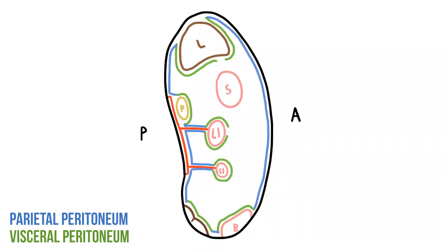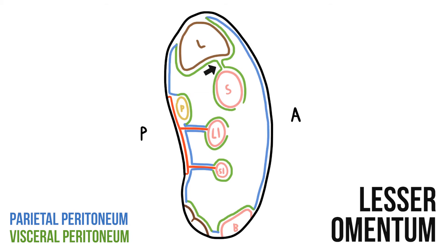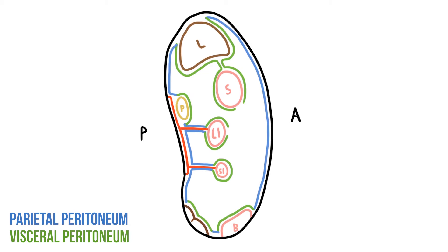The peritoneal membranes that cover an organ don't always originate from the body wall. Sometimes they come from another organ. So for example, the visceral peritoneum at the liver continues inferiorly to surround the stomach. This creates a membrane between the two organs known as the lesser omentum. The visceral peritoneum at the stomach is then continuous with the membrane that surrounds the colon.